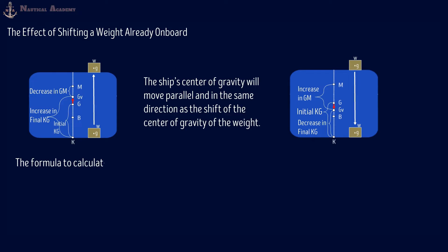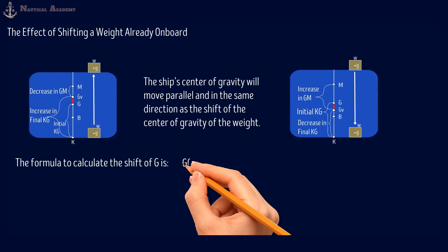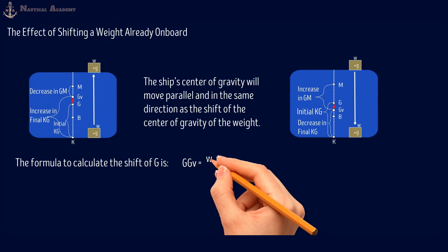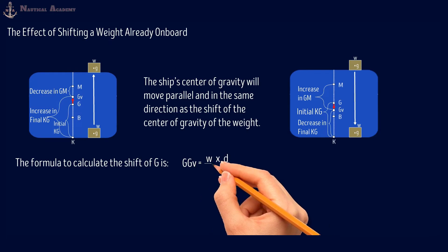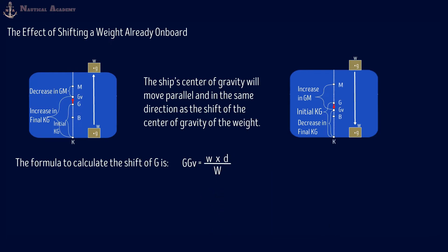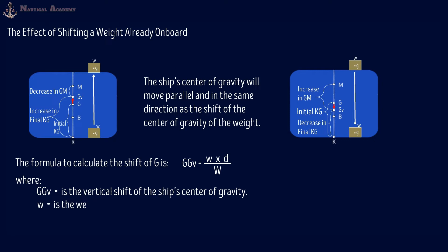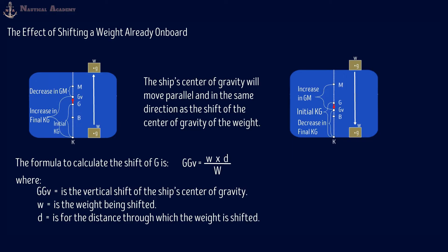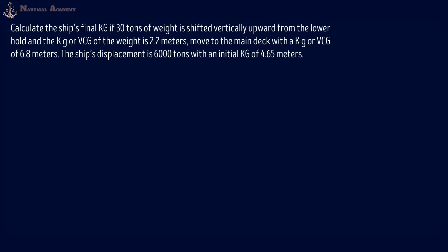The formula for finding the shift of G from its initial position to GV is: GGV equals the weight being shifted times distance, divided by the ship's displacement. Where GGV is the vertical shift of the ship's center of gravity, small letter w is the weight being shifted, small letter d is the distance through which the weight is shifted, and capital letter W is the ship's displacement. Let us have some exercise for the shifting of weight.